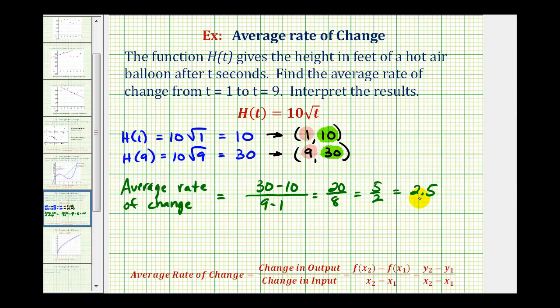Notice how the rate of change is positive, which represents an average increase of H(t) on this interval. To help interpret what this means, it might be helpful to write this as a fraction. So if we have 2.5 over 1, this 2.5 represents the amount of increase in feet, and then 1 represents the increase in time, which is in seconds.